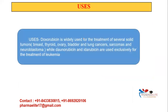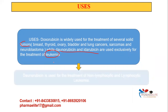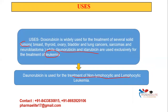Coming to the uses: doxorubicin is used for the treatment of various solid tumors — breast cancer, thyroid, ovary, bladder, lung cancer, and neuroblastoma. Daunorubicin and idarubicin, on the other hand, are used for leukemia (blood cancer). Daunorubicin specifically is used for both non-lymphocytic and lymphocytic leukemia. The main differentiating factor: doxorubicin is for solid tumors, whereas daunorubicin and idarubicin are for leukemia.